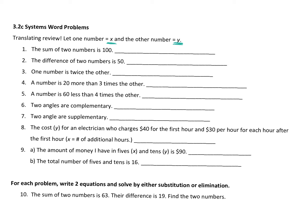So the first one, it says the sum of two numbers is 100. If our numbers are x and y, how do you write that? Yes, x plus y equals 100. Okay, what if it says the difference of two numbers is 50? Difference means subtraction, right? So this is x minus y equals 50.